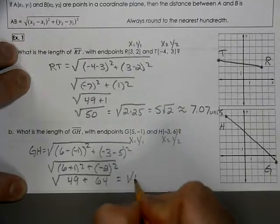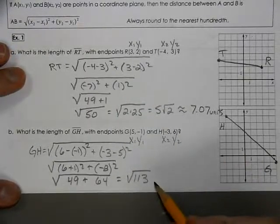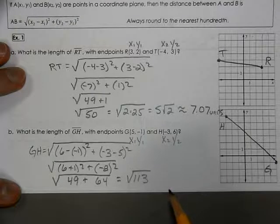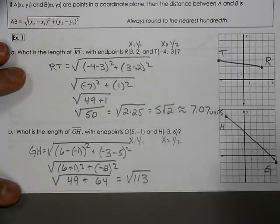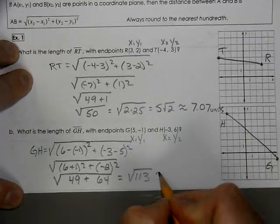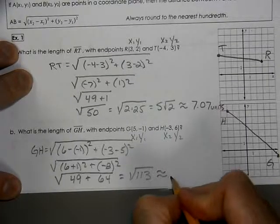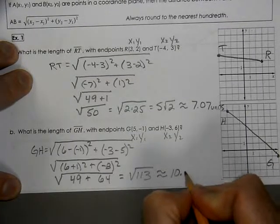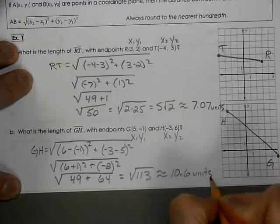This comes out to be the square root of 113. Well, 113 can't be broken down by another perfect square—4 doesn't go into it, 9 doesn't, 25 doesn't. So the best thing is to use a calculator and show that this equals approximately 10.6 units.